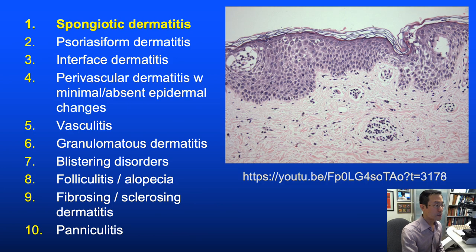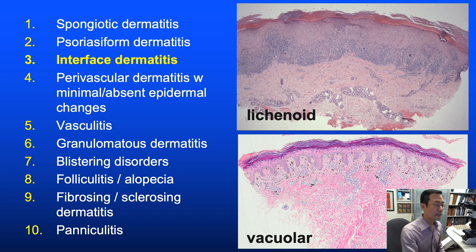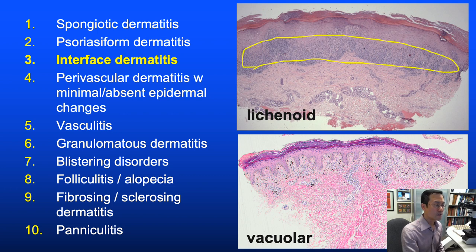The first three patterns are spongiotic dermatitis, psoriasiform dermatitis (prototype: psoriasis), and interface dermatitis (prototype: lichen planus). Interface dermatitis splits into lichenoid—with a dense band-like infiltrate—and vacuolar interface dermatitis, which has a sparser inflammatory reaction with vacuoles along the junction and necrotic keratinocytes but without a dense band-like infiltrate.